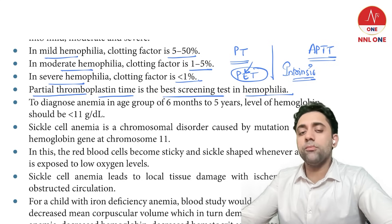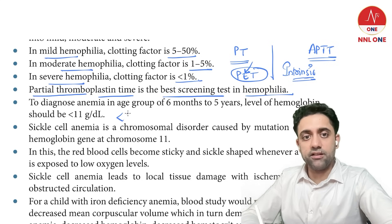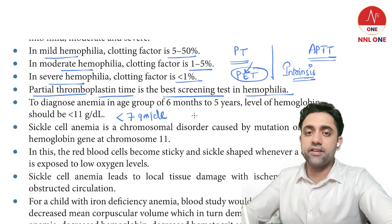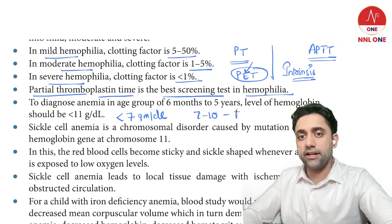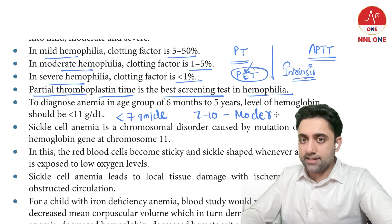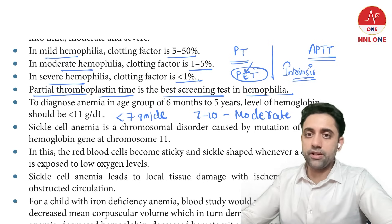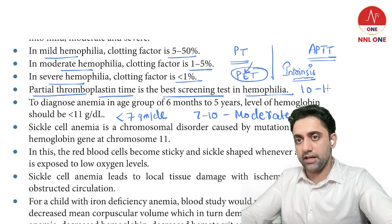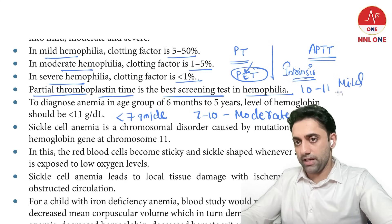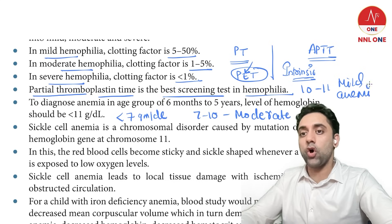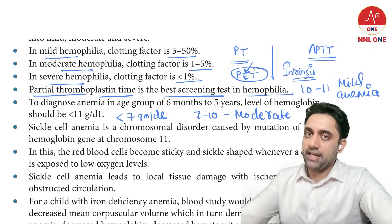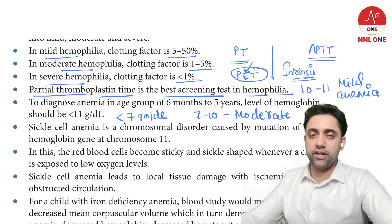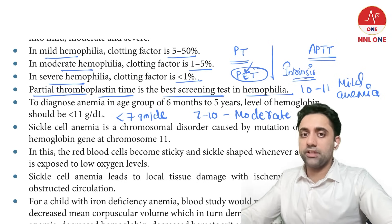Regarding anemia: less than 7 g/dL is severe anemia, 7 to 10 g/dL is moderate anemia, 10 to 11 g/dL is mild anemia, and more than 11 g/dL is non-anemic.